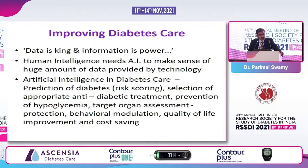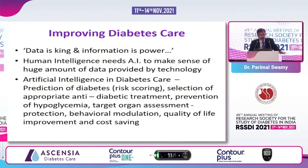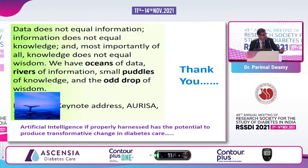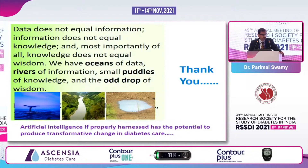To summarize: data is the king, and information is the power. Human intelligence needs AI to make sense of the huge amount of data provided by technology. Artificial intelligence in diabetes care can produce transformative improvement right from prediction of diabetes, diabetes treatment, prevention of hypoglycemia, target assessment, behavioral modification, improvement of quality of life, and even cost savings for the patient and for society. Like many of you, I am also an old-timer, and I hope and believe that from the oceans of data and rivers of knowledge, it is us — the human beings — who are going to take out the drops of wisdom. Thank you very much for your patient hearing.